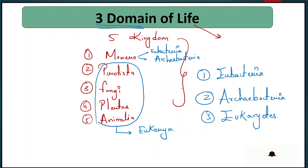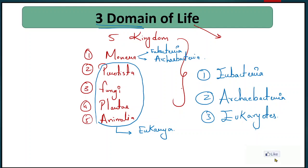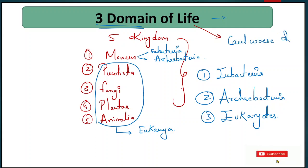These were our three domain system. There are also many questions based on this. To solve them, we will study the comparison table first. The three domain system was given by Carl Woese and Fox, and it was proposed in 1999.